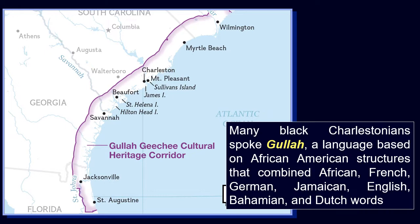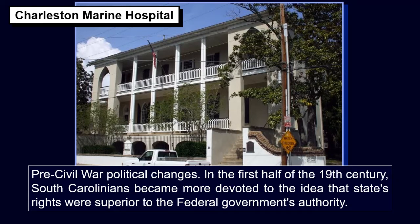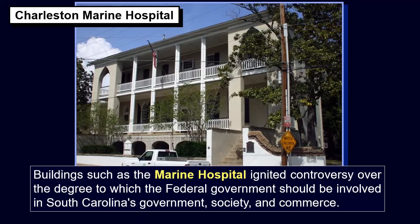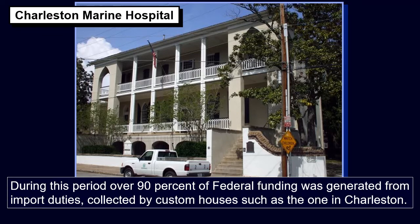Many black Charlestonians spoke Gullah, a language based on African American structures that combined African, French, German, Jamaican, English, Bahamian, and Dutch words. In the first half of the 19th century, South Carolinians became more devoted to the idea that states' rights were superior to the federal government's authority. Buildings such as the Marine Hospital ignited controversy over the degree to which the federal government should be involved in South Carolina's government, society, and commerce. During this period, over 90% of federal funding was generated from import duties collected by custom houses such as the one in Charleston.